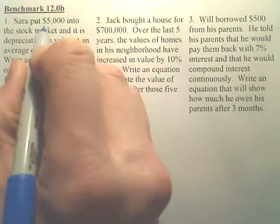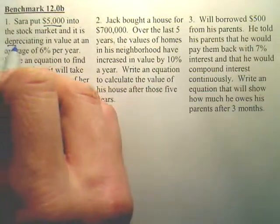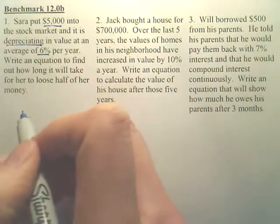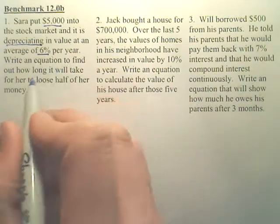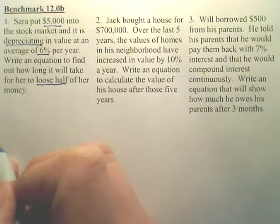For number one, Sarah has $5,000 in a stock market. It is depreciating, which means shrinking, at 6% each year. Write an equation to find out how long it would take for her to lose half of her money.